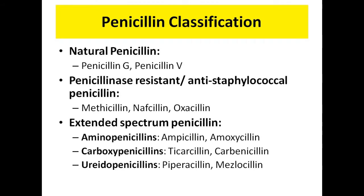Penicillin can be classified into various categories including natural penicillin, which includes penicillin G and penicillin V. The next group is penicillinase-resistant or anti-staphylococcal penicillin, which includes methicillin, nafcillin, and oxacillin. The next group is extended spectrum penicillin, which includes aminopenicillins like ampicillin and amoxicillin, carboxypenicillins like ticarcillin and carbenicillin, and ureidopenicillins like piperacillin and mezlocillin.